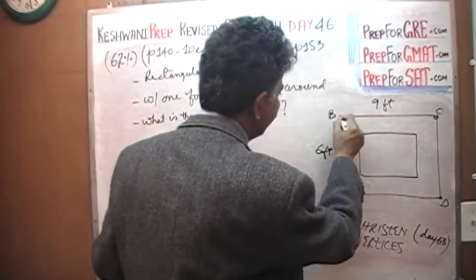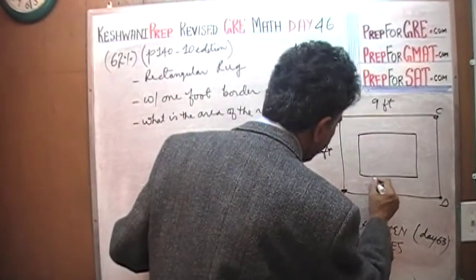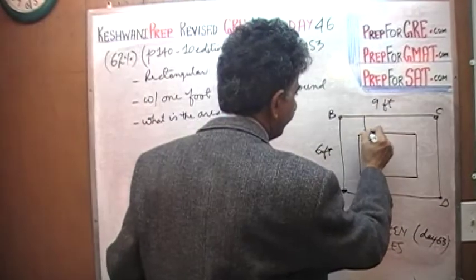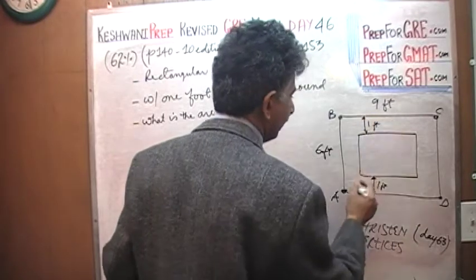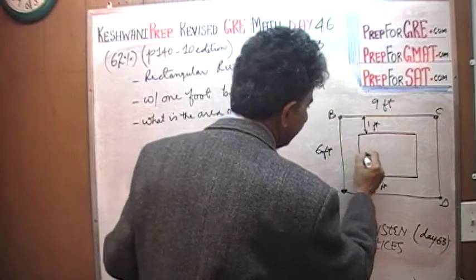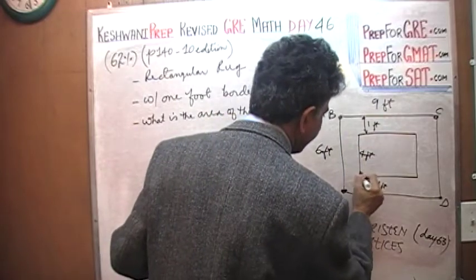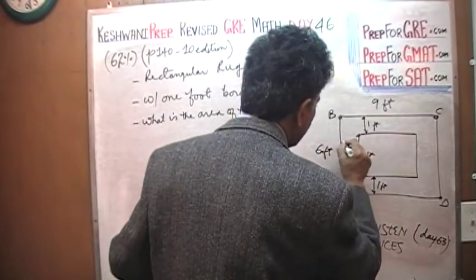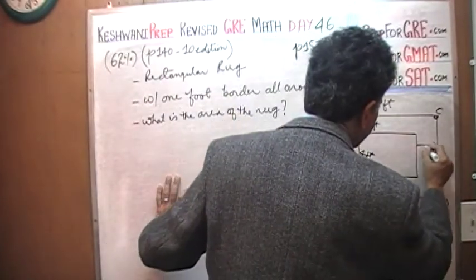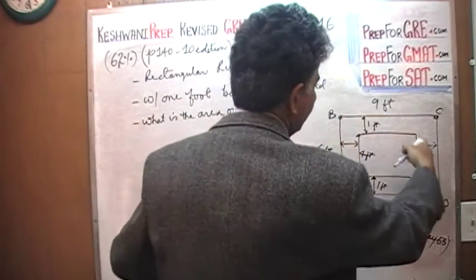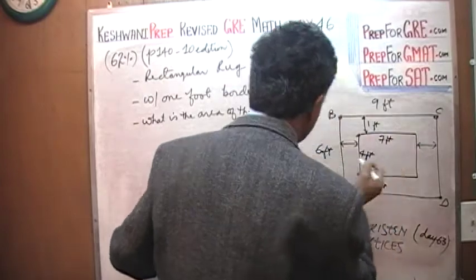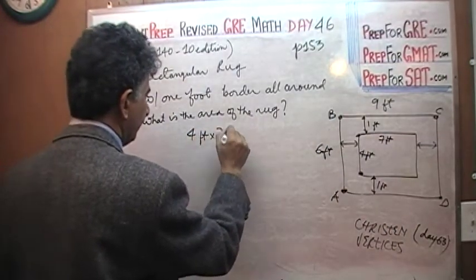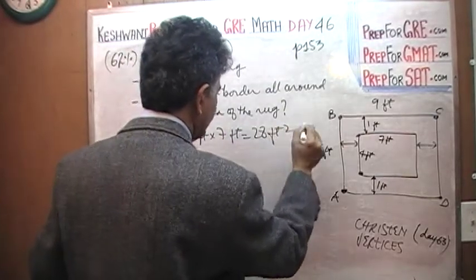From A to B is 6 feet, and we are told it has a border of 1 foot on each side — 1 foot here and 1 foot there — so the rug itself is 4 feet in that direction. Similarly, B to C is 9 feet, with a 1-foot border on each end, leaving 7 feet. So the area of the rug is 4 feet by 7 feet = 28 square feet.